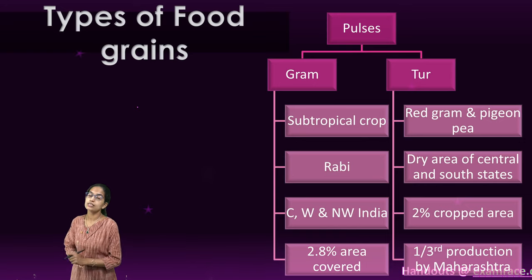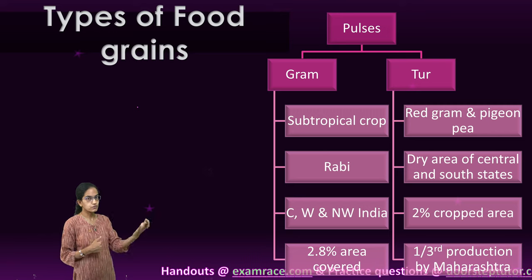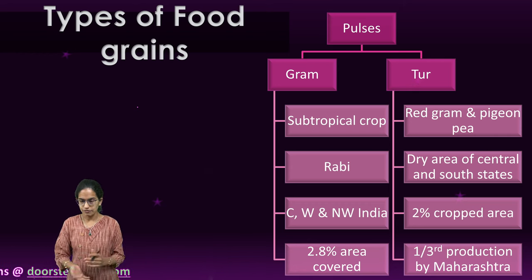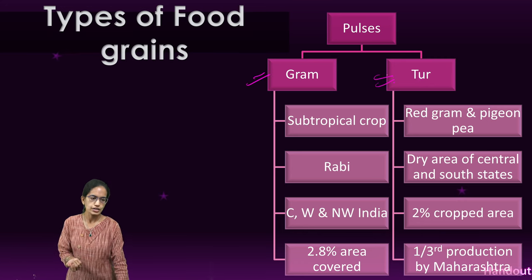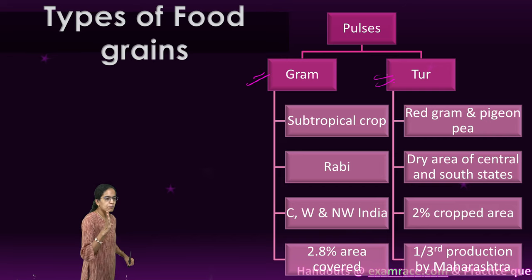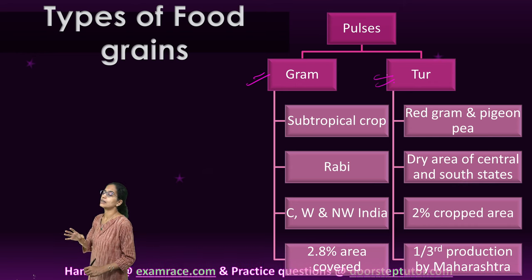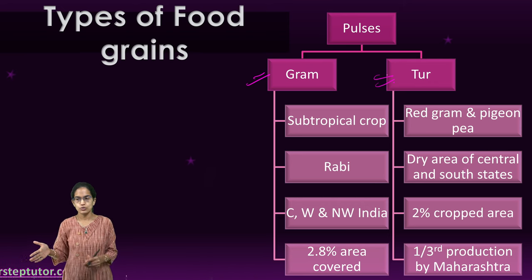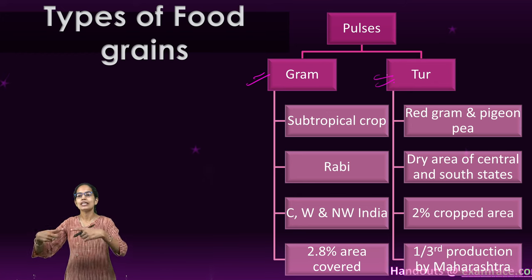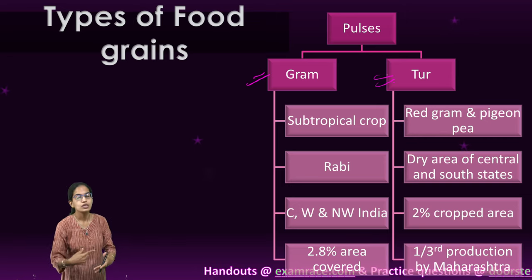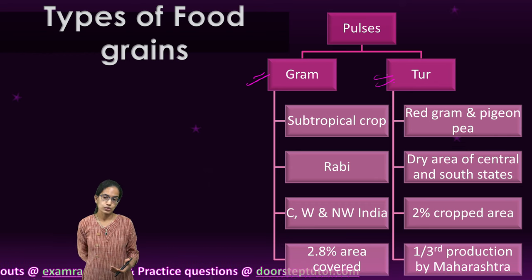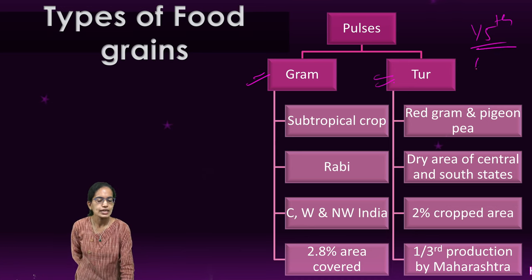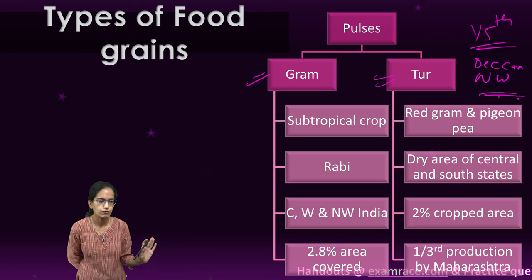Pulses — the dals we commonly eat — the most common are gram and tur. Pulses naturally contain higher nitrogen and are important for nitrogen fixation in soil, so they are often grown alongside other crops. India is a leading producer of pulses, with one-fifth of the world's total pulse production coming from India. The Deccan area and northwest belt are major pulse cultivation zones.